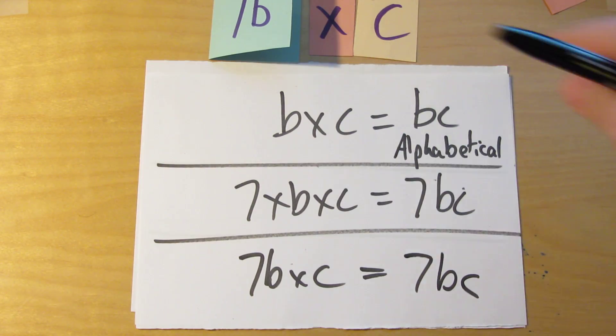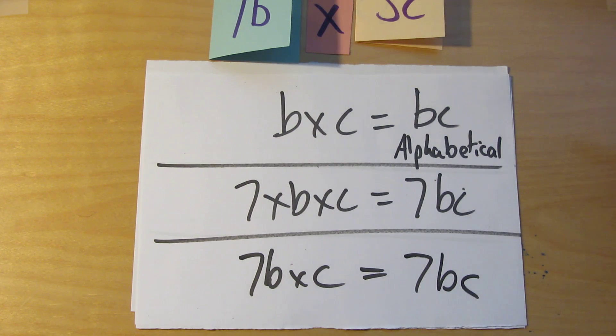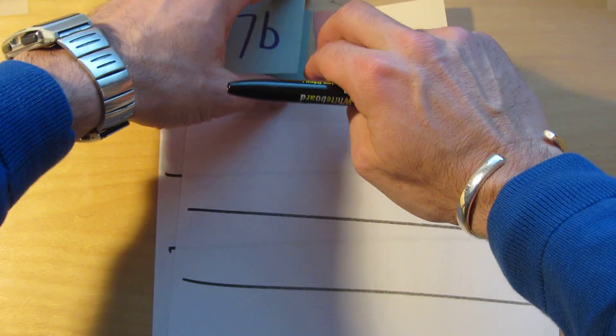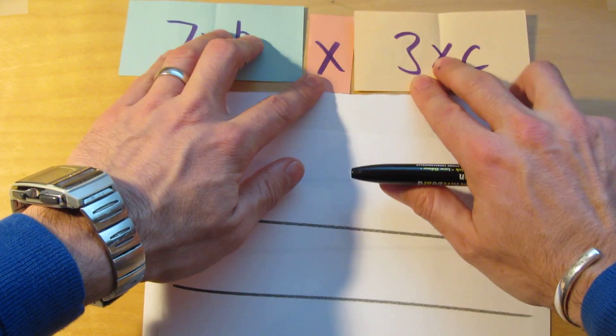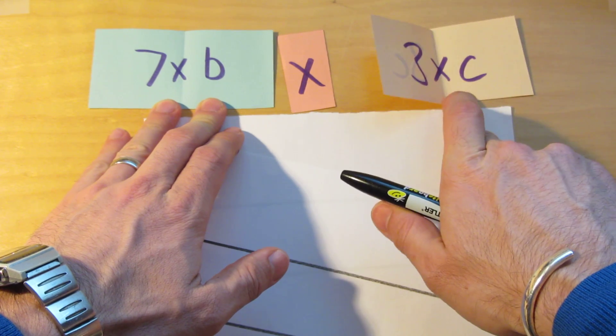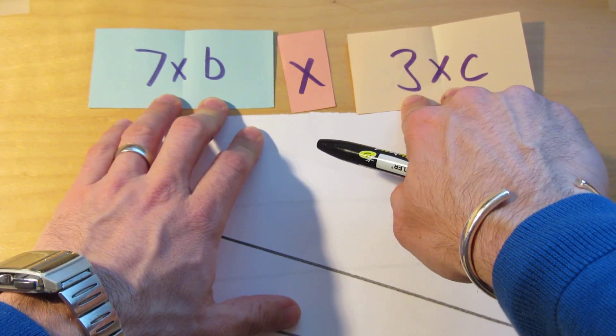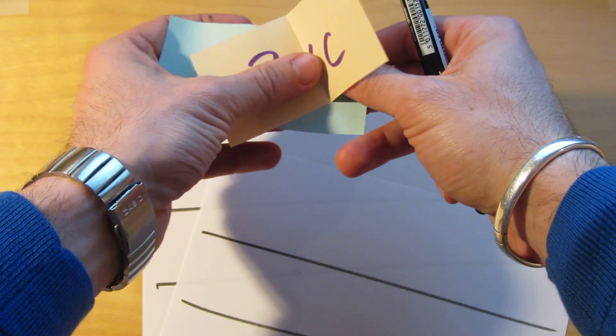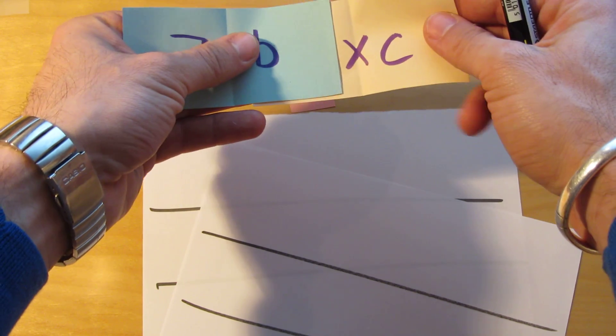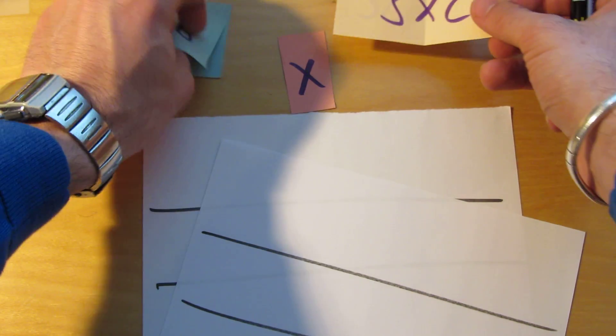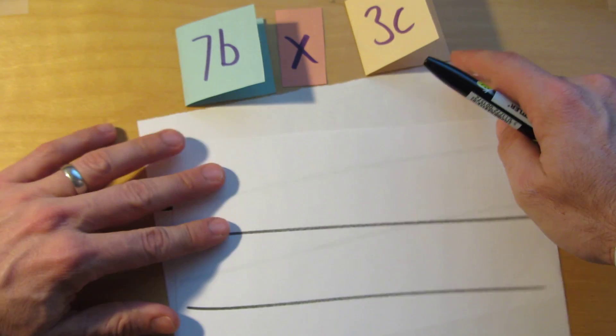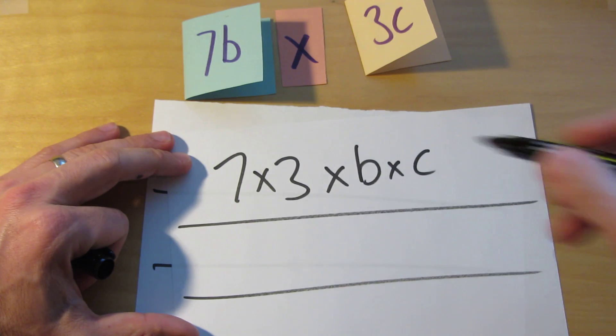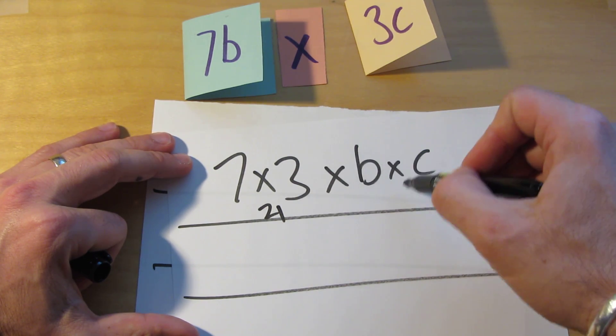Okay we'll keep the 7b there and swap the c for 3c. So we've got 7b times 3c. Well okay 7b stands for 7 times b. And 3c stands for 3 times c. So what we've got now is 7 times b times 3 times c. What I'd really like to do is try and rearrange this so that I've got the numbers multiplied together, 7 times 3, and the variables multiplied together, b times c. So if I write that out we would have something like this. 7 times 3 times b times c. And that bit is obviously 21. And b times c is bc.